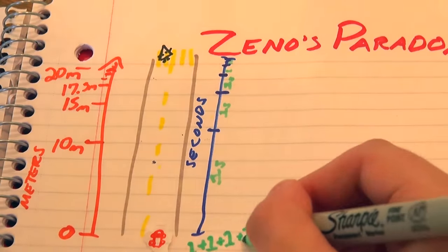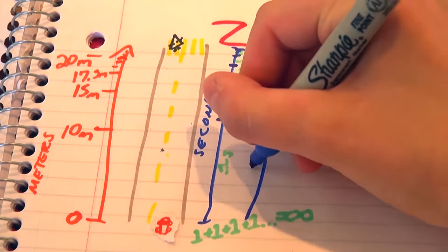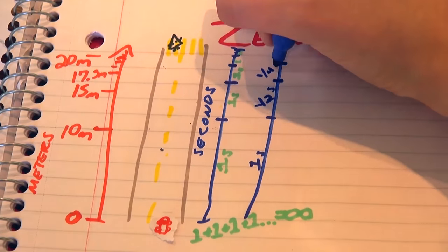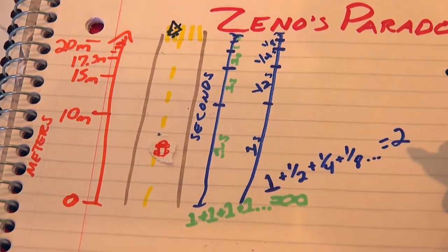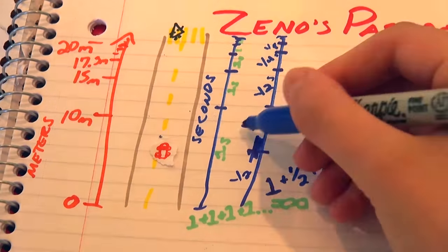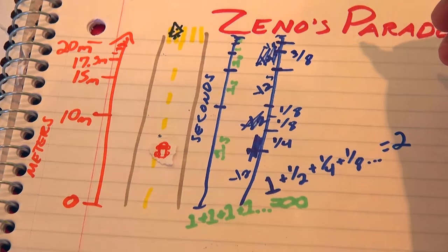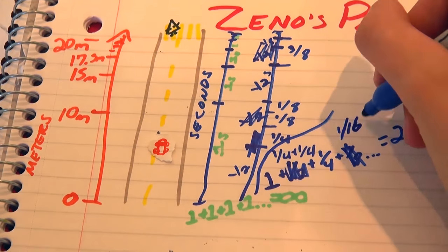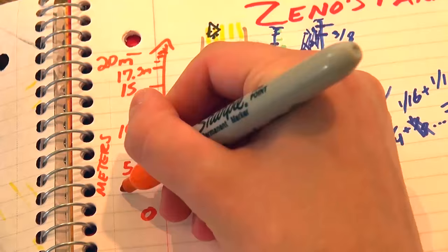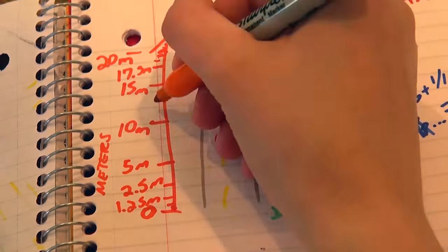But say you drive those first 10 meters in one second, and those next five meters in half a second, and the next two and a half meters in a quarter of a second. It doesn't matter how many infinite bits of distance you're adding up. You can break apart those two seconds and 20 meters in whatever way you find interesting, but two seconds later you've still gone 20 meters, and 2.1 seconds later you're still trying to ruin my day.